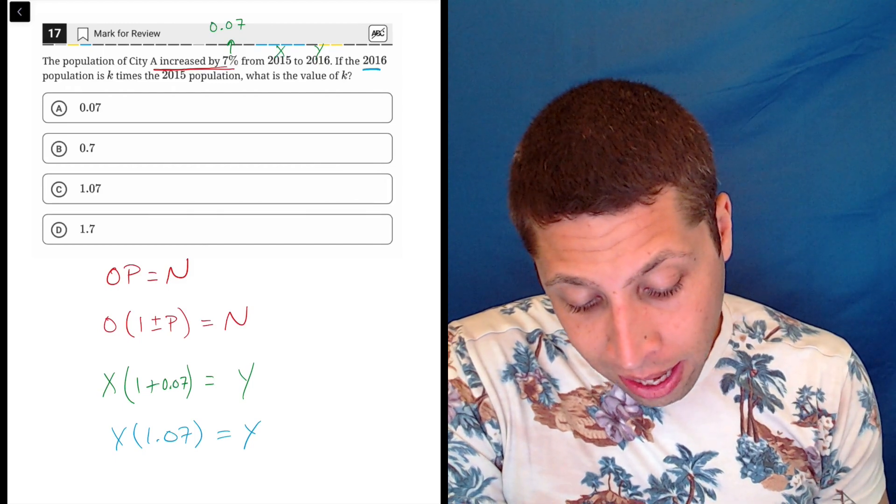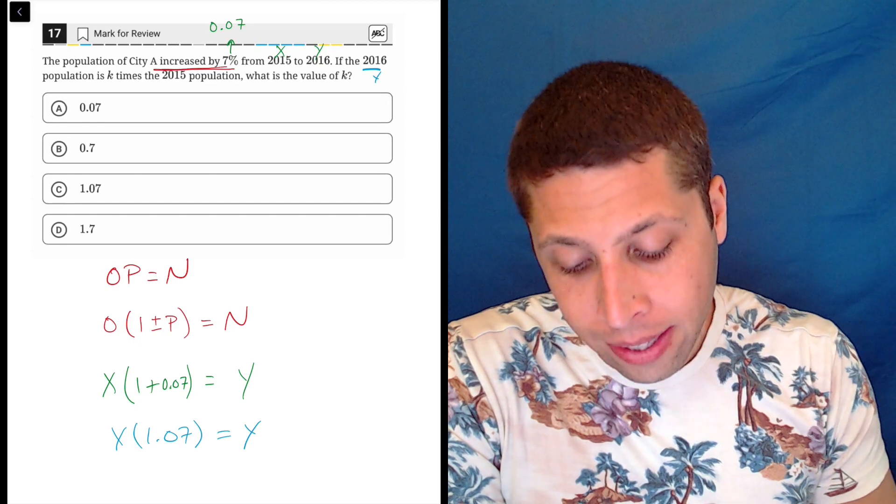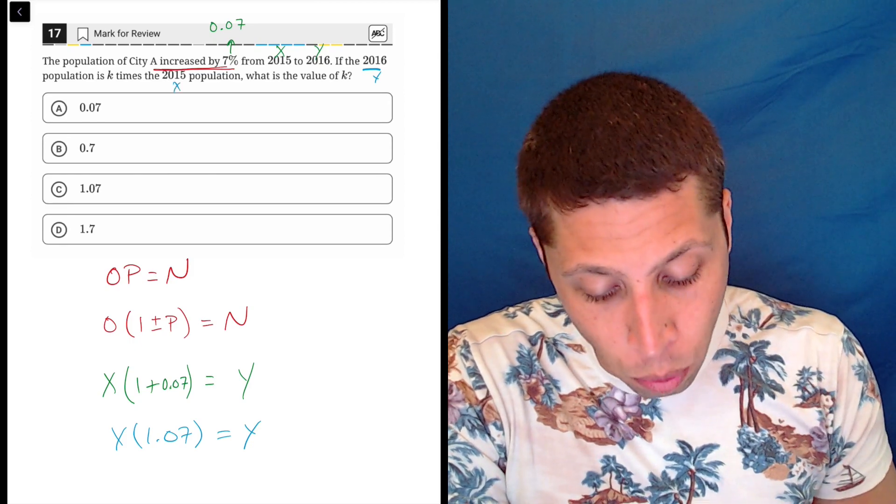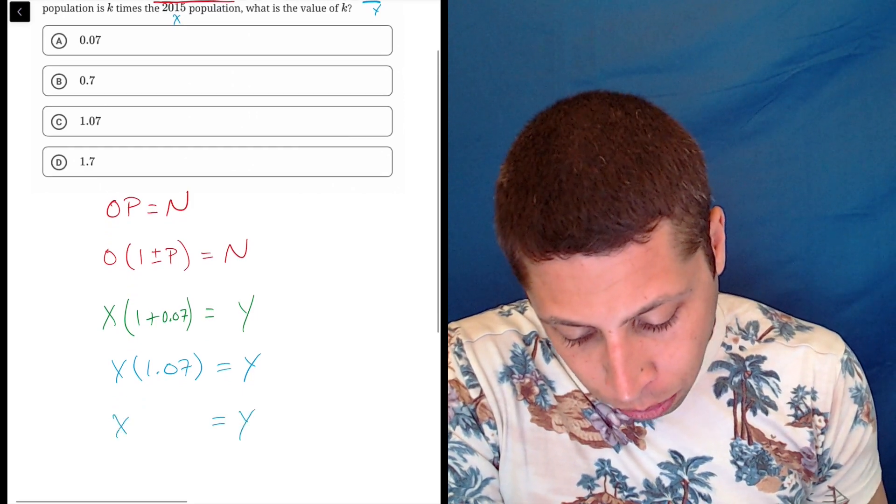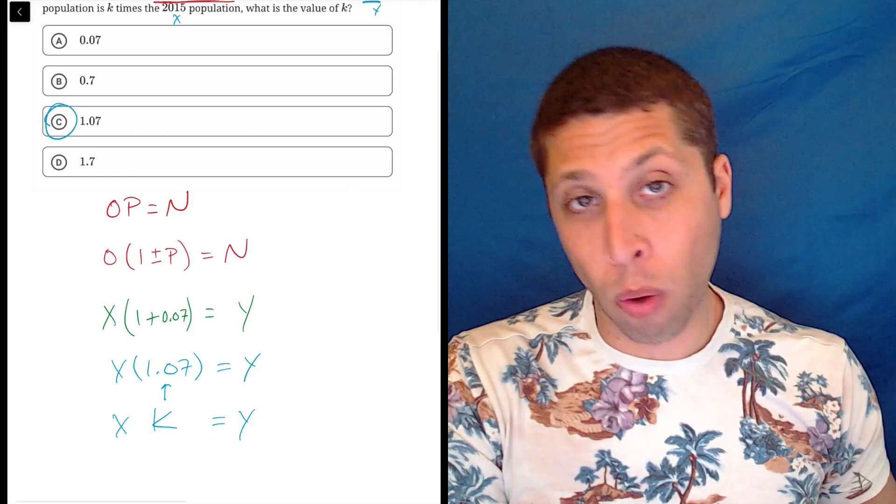And what do they want? Look at the question. If the 2016 population, so that's Y, is K times the 2015 population, that's X, what is the value of K? So they're just saying that Y is equal to X times K. So K is 1.07.